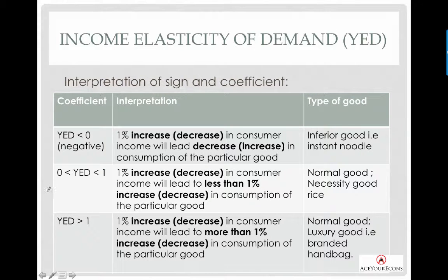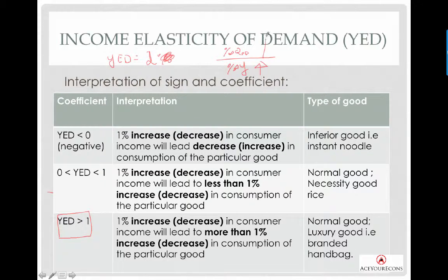Now let's look at YED greater than one, which is always positive. YED greater than one tells you that for every one percent increase in your pocket money, you are going to increase quantity demanded by more than one percent — say two percent. These goods belong to what we call luxury goods, meaning when you experience an increase in income, you want to consume a more-than-proportional amount of these goods.